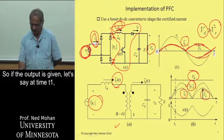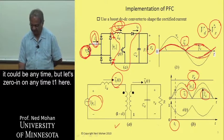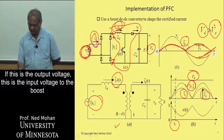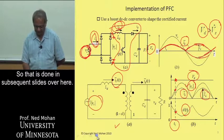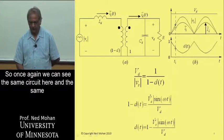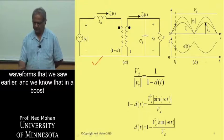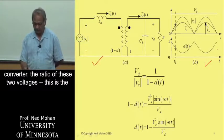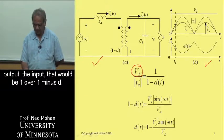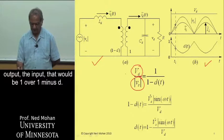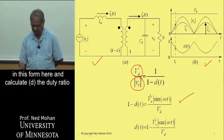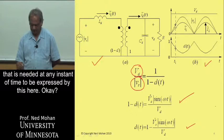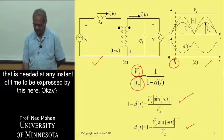If the output is given, let's say at time T1 — any particular time — if this is the output voltage and this is the input voltage to the boost converter, then we can calculate what the duty ratio would be. We can see the same circuit and waveforms again. In a boost converter, the ratio of output to input voltage is 1 over (1 minus D). From that, we can rewrite the equation and calculate D, the duty ratio needed at any instant of time, expressed by this formula here.